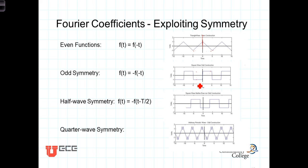Then there's what's known as half-wave symmetry. The second half of the period is not the same — it is the same but opposite in sign. So f(t) up through T/2 is equal to negative f(t minus T/2). Here's a periodic function that's neither even nor odd. You can have half-wave symmetry in even or odd functions, but a function doesn't have to be even or odd to be half-wave symmetric.